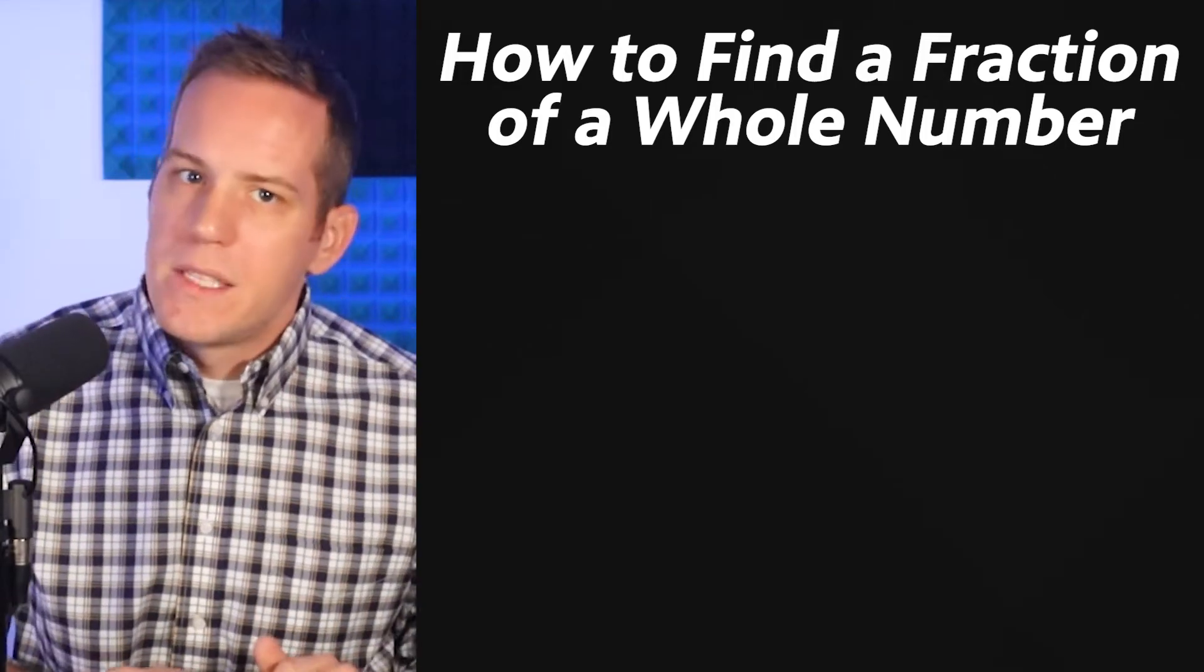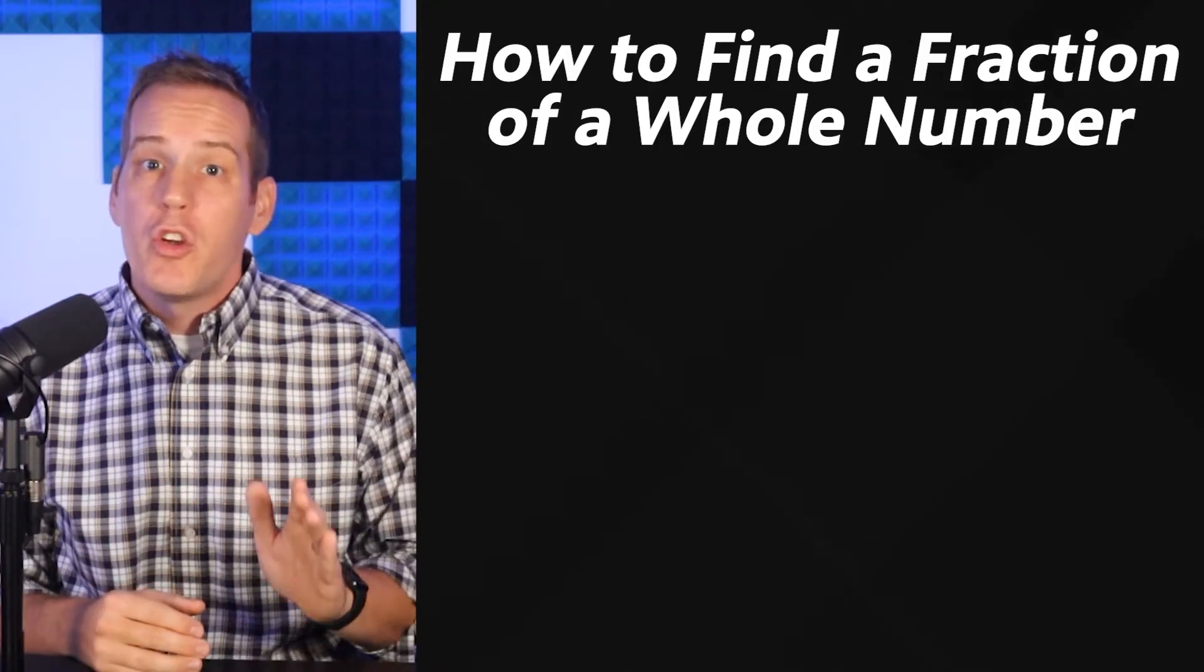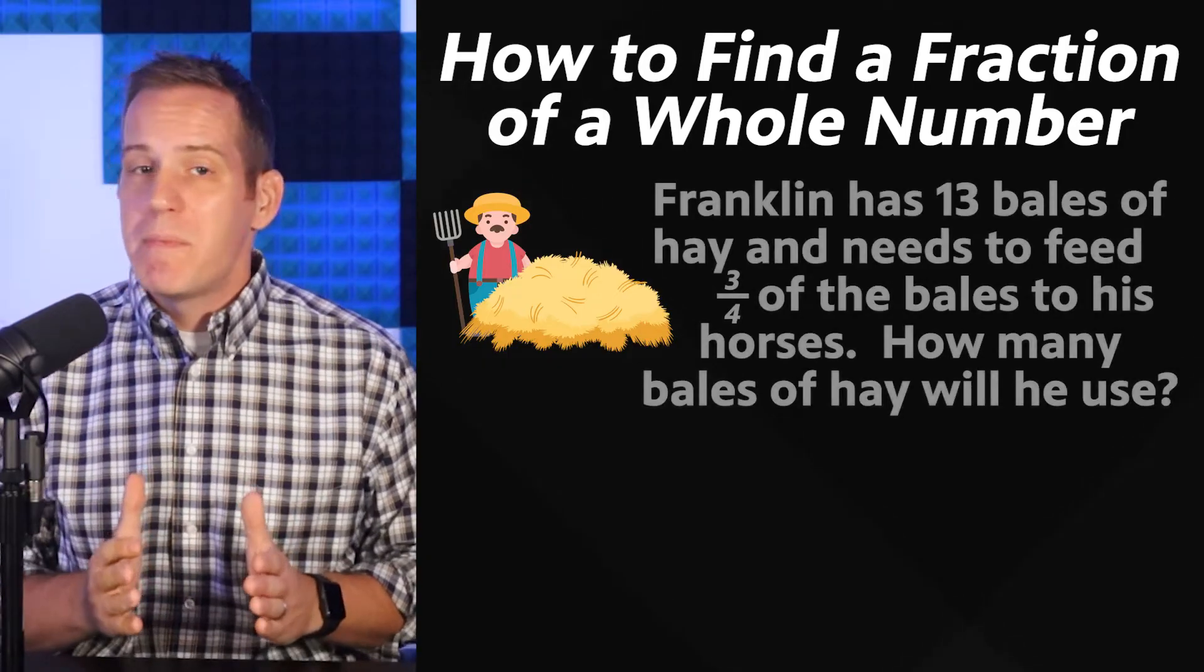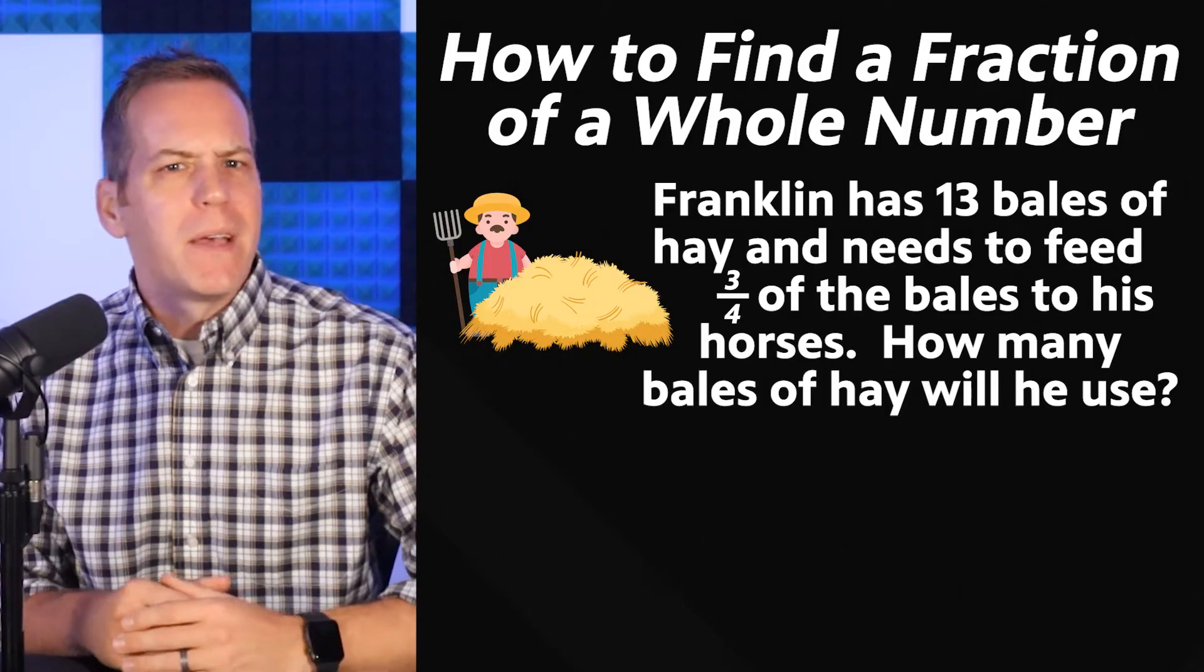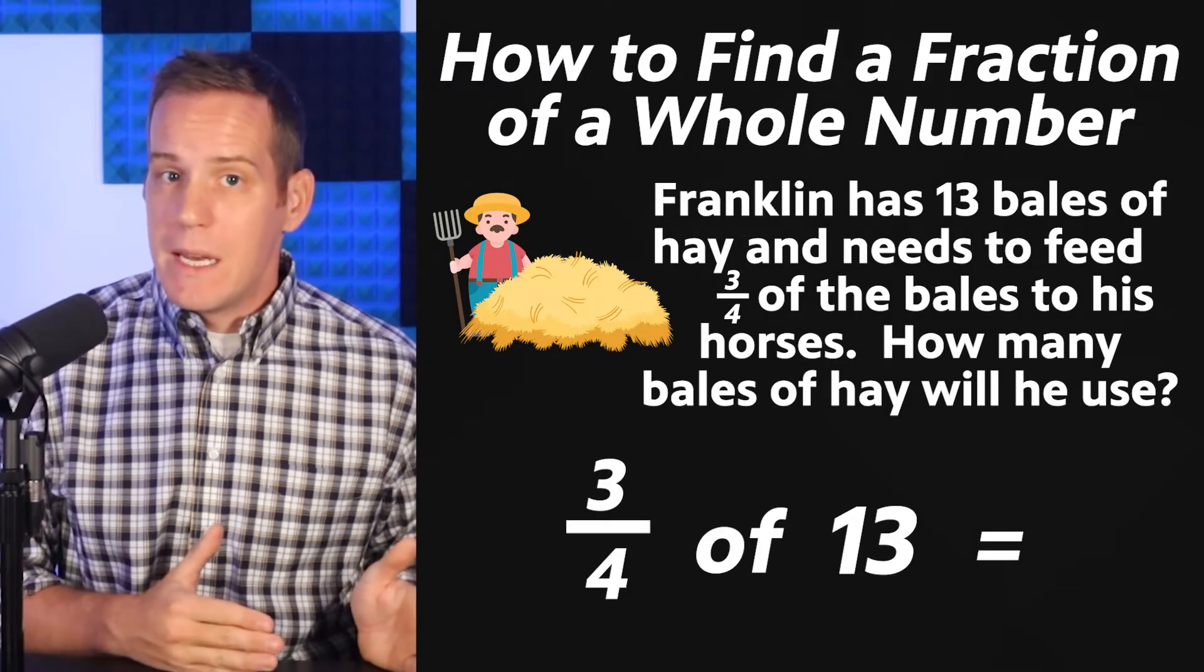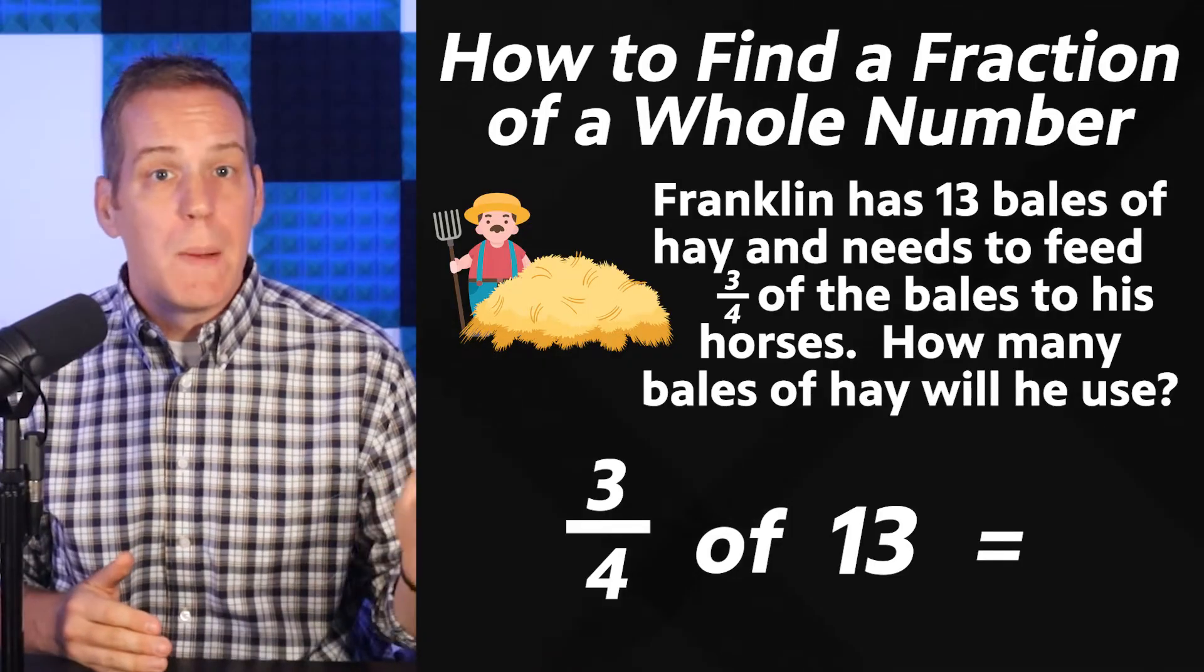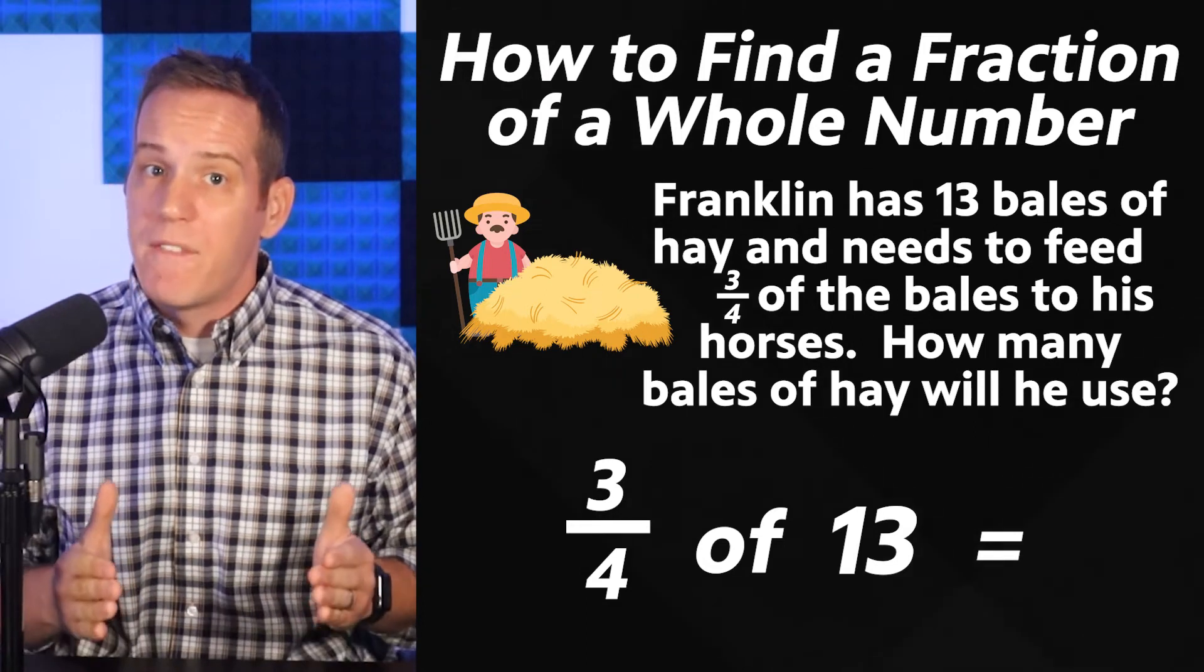But now let's crank the difficulty level just a tad. Remember how I said there'd be a harder way to do this too? Well let me show you why you might have to use that harder strategy. Let's go back to our old pal Franklin. This time he has to feed some horses. He has 13 bales of hay and he needs to feed 3 fourths of those bales to the horses. How many bales of hay is that? The math problem here is this: What is 3 fourths of 13? If we try our other strategy we'd have some problems. Can you see why? It's because 4 can't go into 13 perfectly. If I count by 4s I won't land on 13. So I can't do that first strategy.